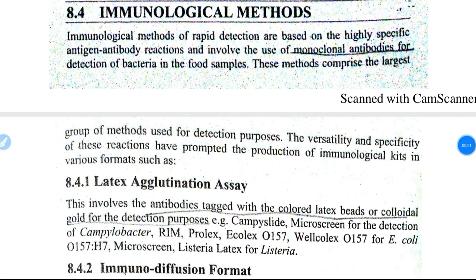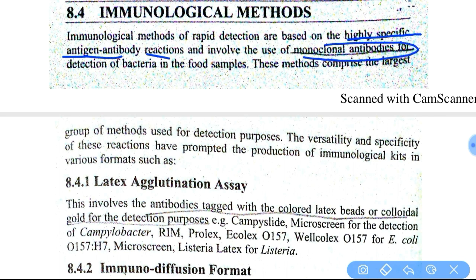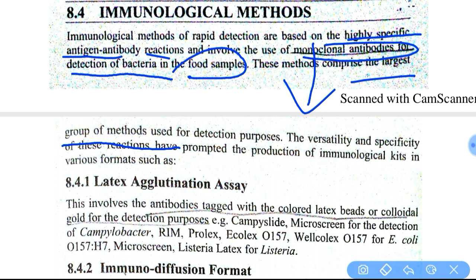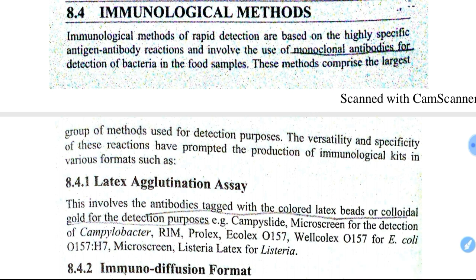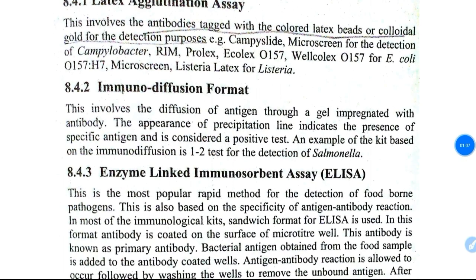Immunological methods. In immunological rapid test methods, we use highly specific antigen-antibody reactions and involve the use of monoclonal antibodies for detection of bacteria in food samples. Monoclonal antibodies recognize a single type of antigen, which is why they are called monoclonal antibodies. These methods comprise the largest group of methods used for detection purposes. The versatility and specificity of these reactions have prompted the production of immunological kits in various formats.